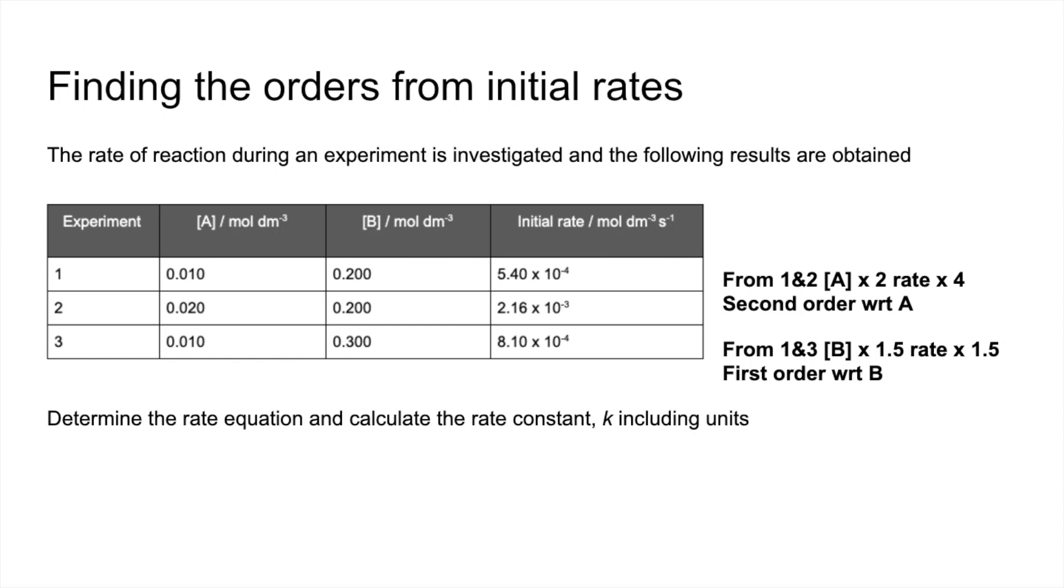So we can write the rate equation now. So rate equals K, concentration of A squared multiplied by concentration of B. And so to work out the rate constant K, we rearrange the rate equation for K.